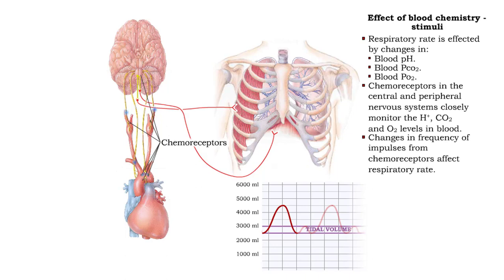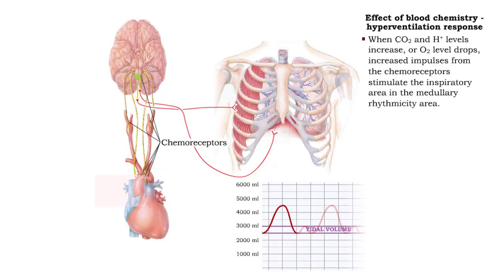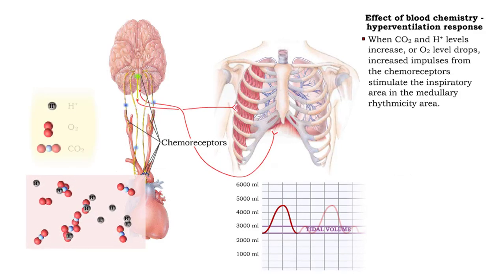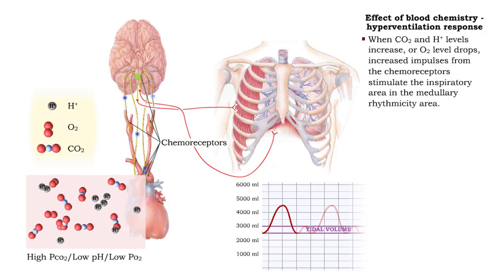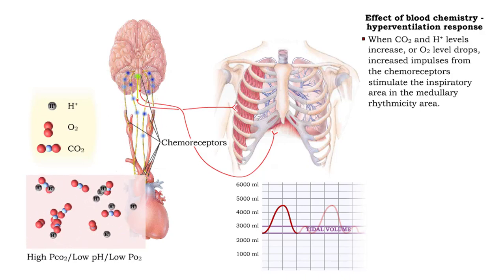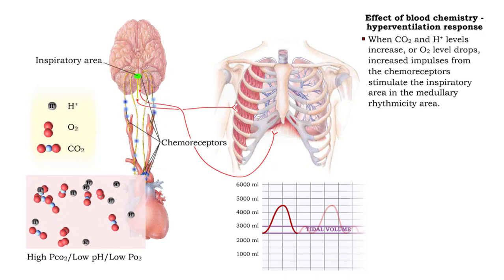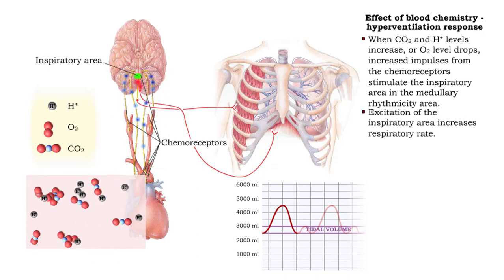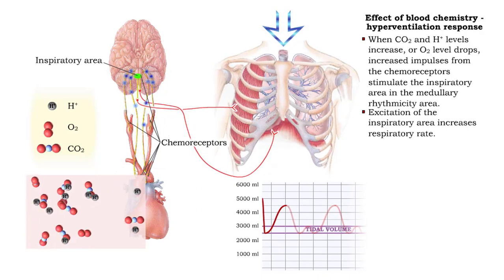Changes in the frequency of impulses from the chemoreceptors affects respiratory rate. When carbon dioxide and hydrogen ion levels increase, or oxygen level drops, increased impulses from the chemoreceptors stimulate the inspiratory area in the medullary rhythmicity area. Excitation of the inspiratory area increases respiratory rate.